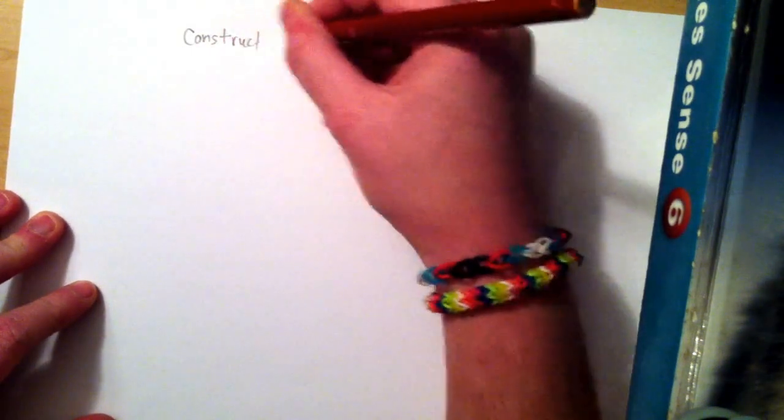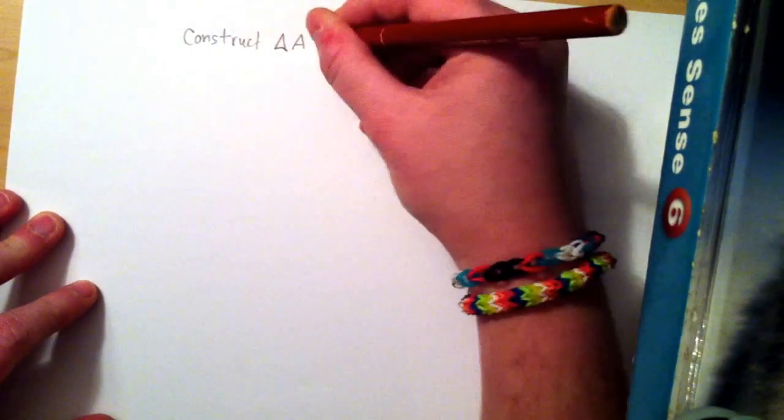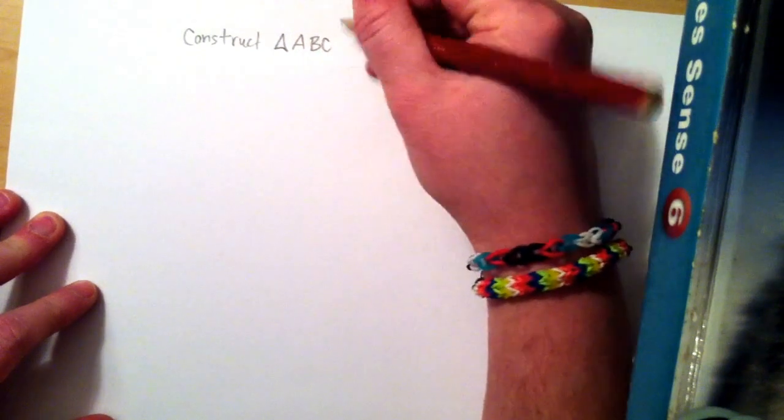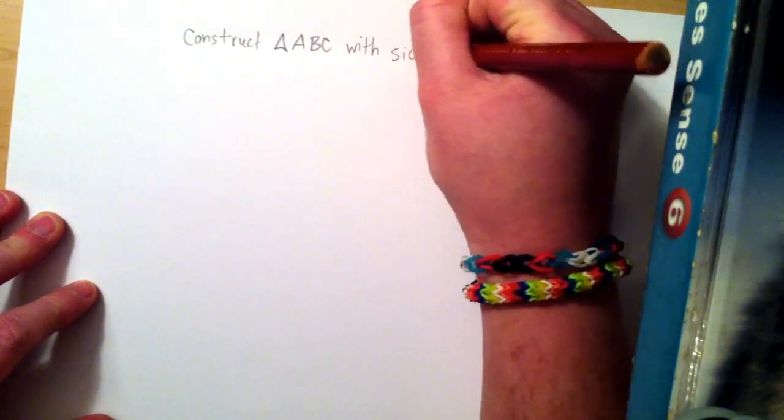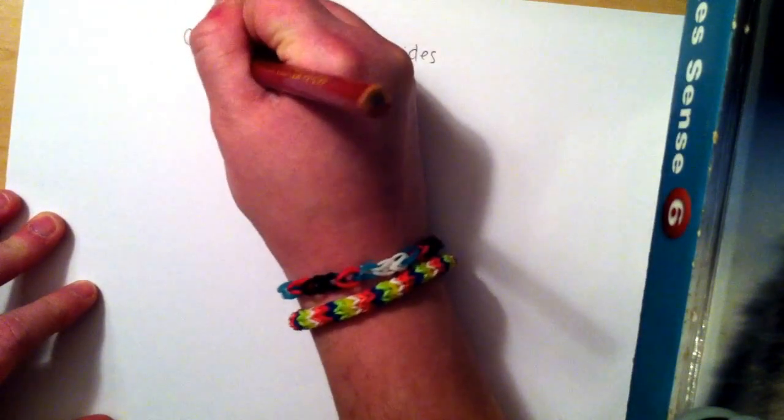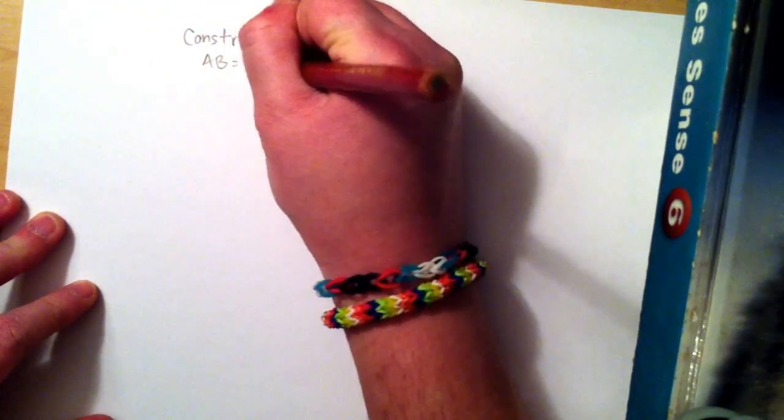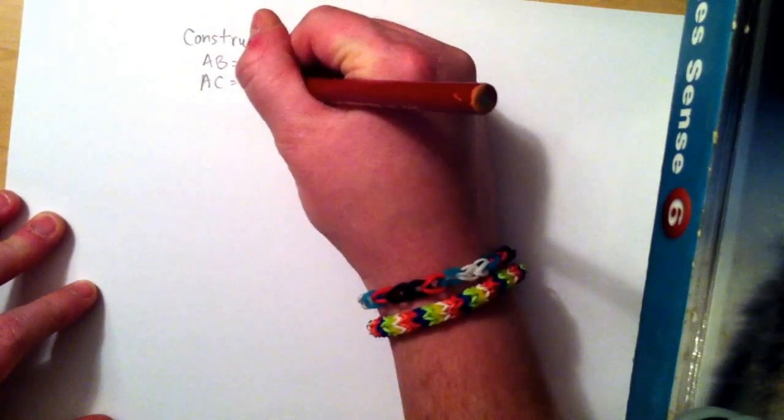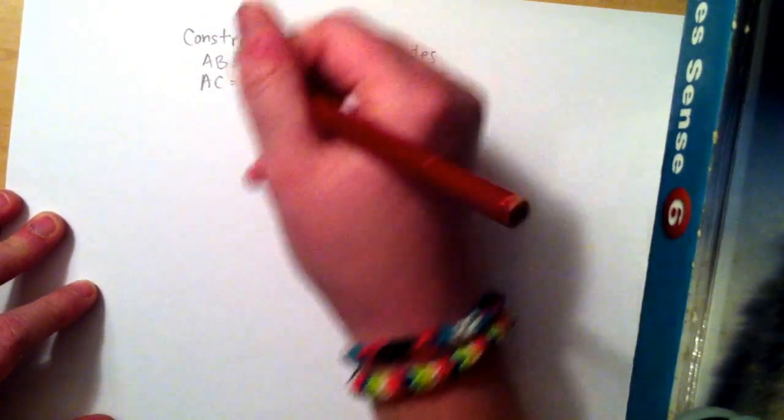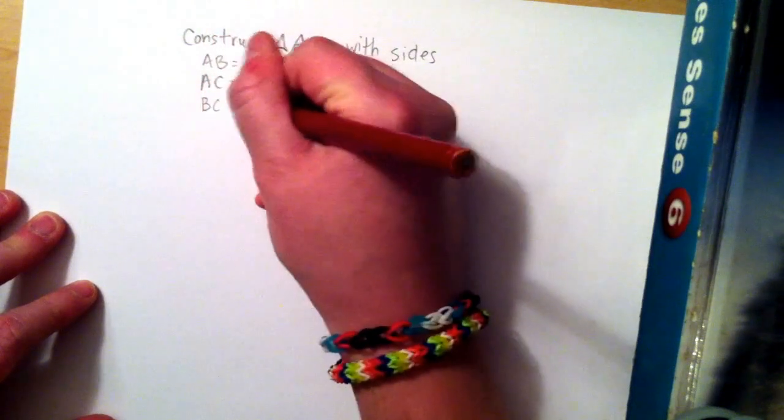In this problem, we will be constructing triangle ABC given the certain lengths of all three sides. The side lengths we have are AB at 6 cm, AC at 5 cm, and BC at 4 cm.